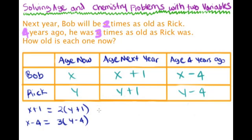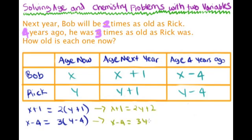We can now solve using any method — I recommend avoiding graphing since it's not efficient. I'll use the addition and subtraction method. Simplifying: x plus one equals 2y plus two, and x minus four equals 3y minus 12. Moving all variables to one side: x minus 2y equals one, and x minus 3y equals negative eight.